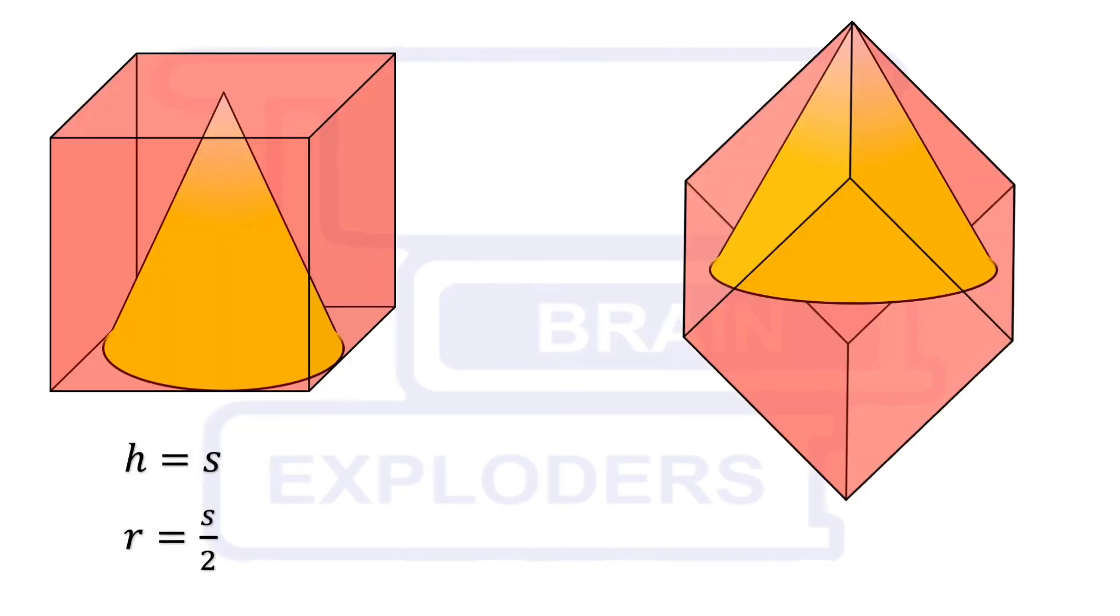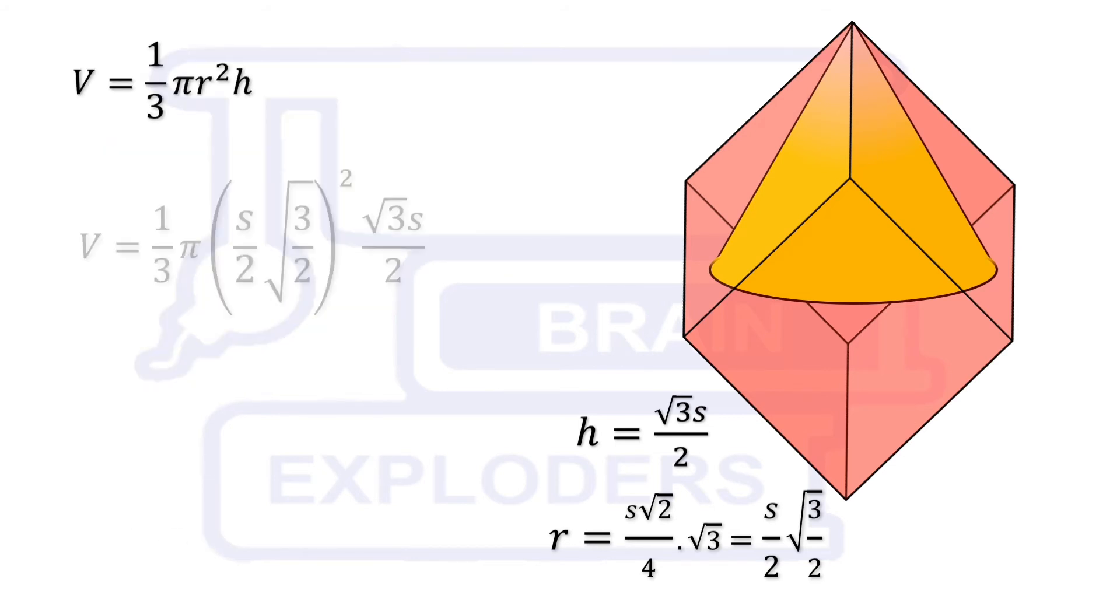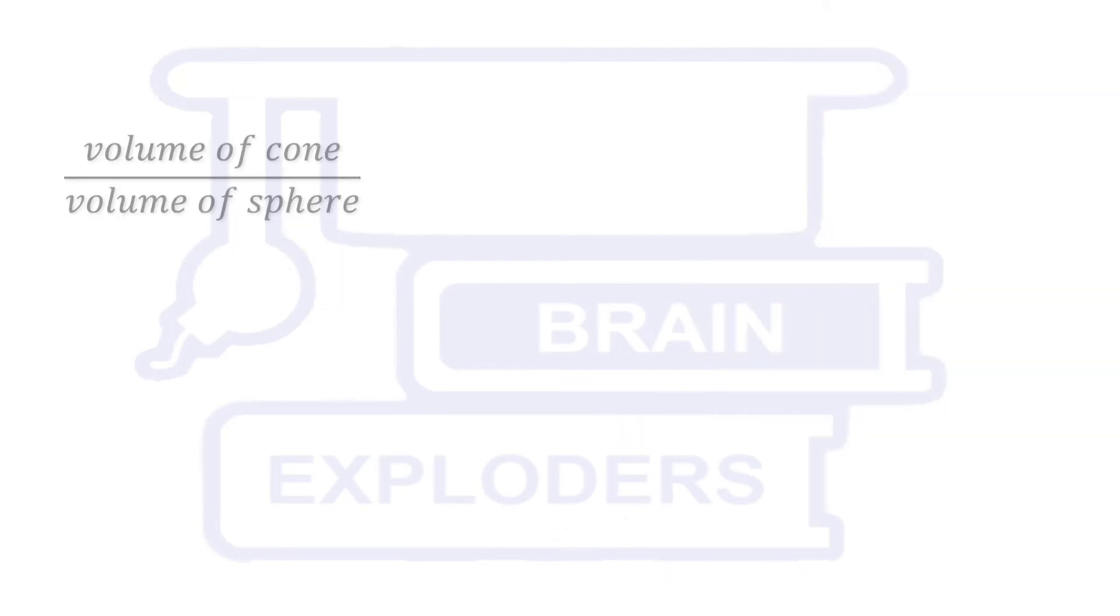You can see that height and radius of this second cone are greater than first cone. Volume of cone is equal to pi r squared h over 3. On putting the values of h and r, we get volume equals to pi root 3 s cubed over 16. So the ratio of volumes of the cone and the sphere is equal to 1 ratio 8.